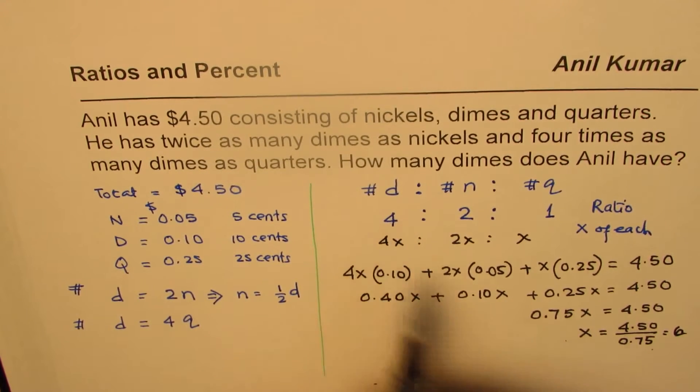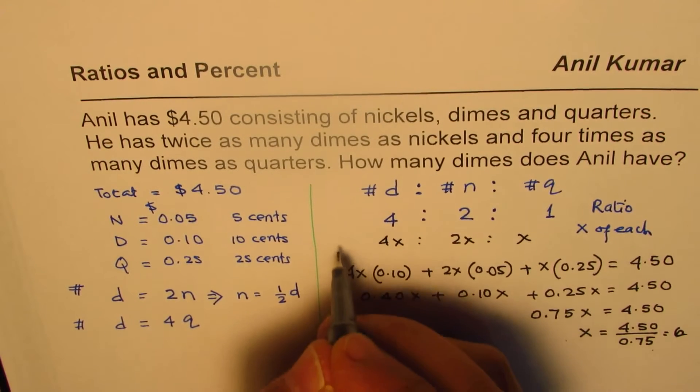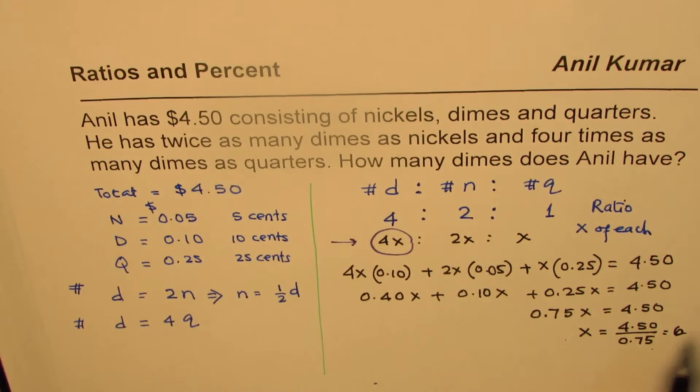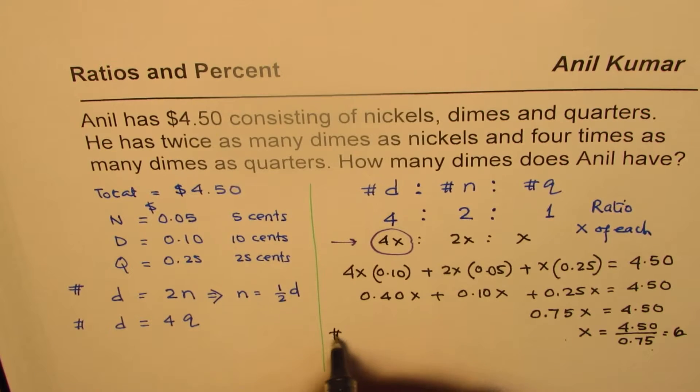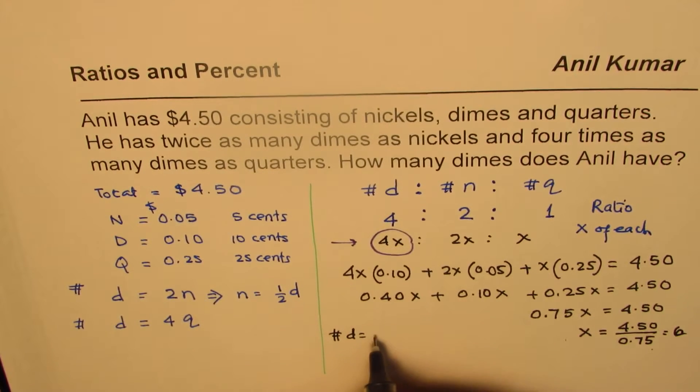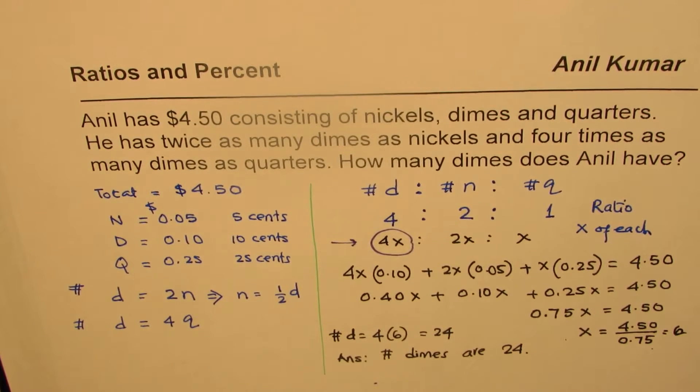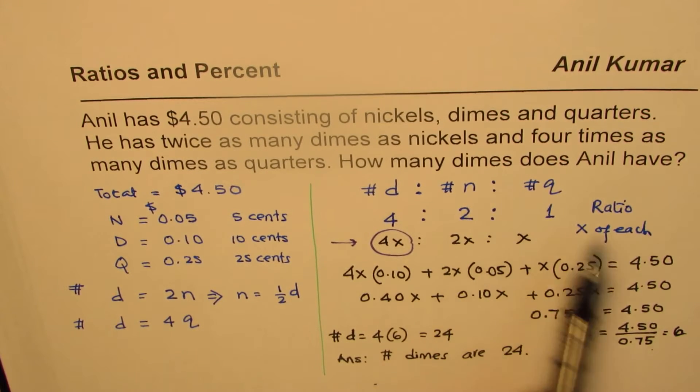If x is 6, we can substitute this value of x here and find the number of dimes. So number of dimes are 6 times 4. So we have number of dimes as equal to 4 times 6, which is 24. So we get our answer that number of dimes are 24. As an exercise, you can find the number of nickels and quarters and verify if the total is same as 4.50 or not.